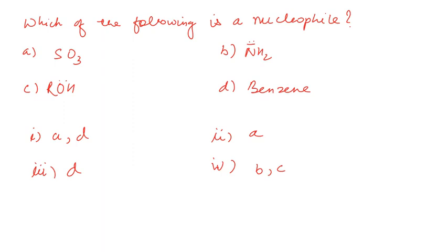This question asks which of the following is a nucleophile. Let us understand what a nucleophile is. Nucleophiles have a lot of electron density and can donate electrons very easily. Here we have given: SO3, NH2⁻, ROH, and Benzene.